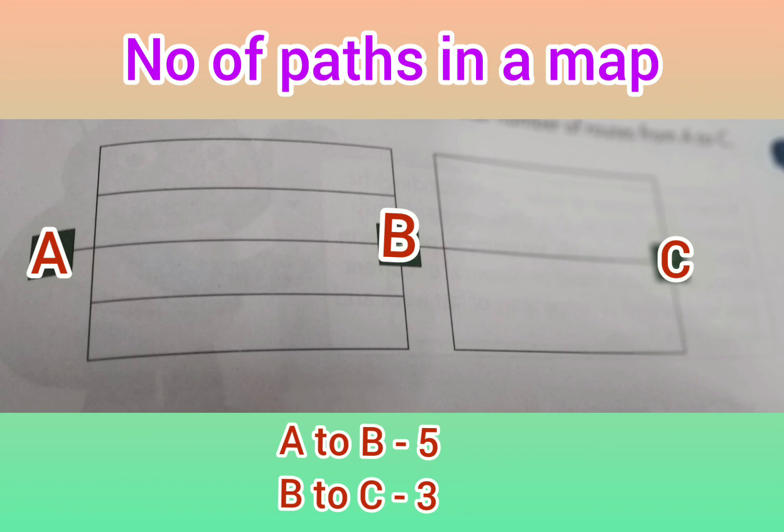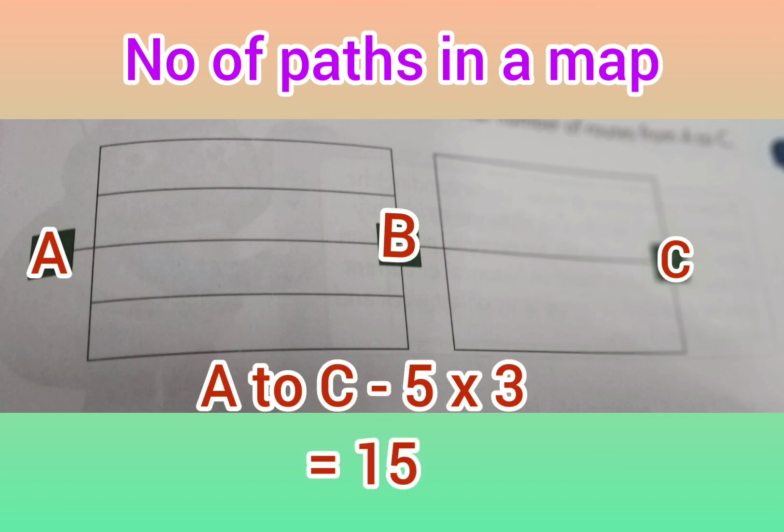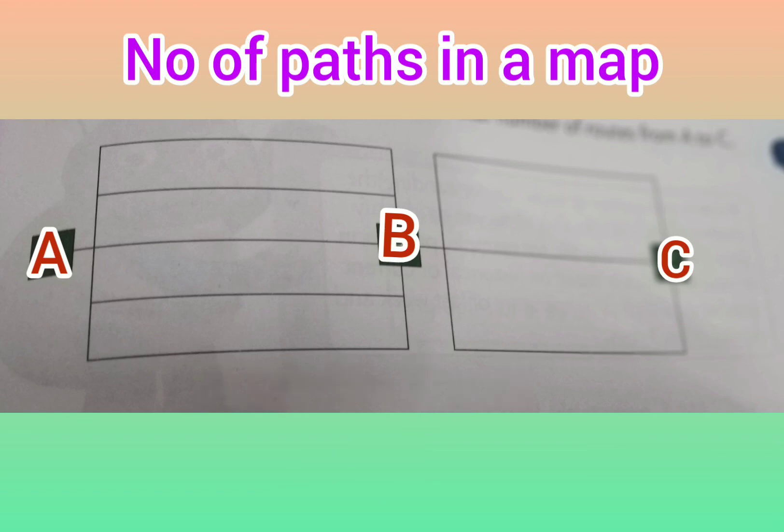So if we have to reach from point A to point C we can choose different paths. That is why we will apply multiplication rule here. And now we have to reach from point A to point C, then we can get 5 into 3 that is equal to 15. So from point A to point C we are getting 15 different paths. Thank you.